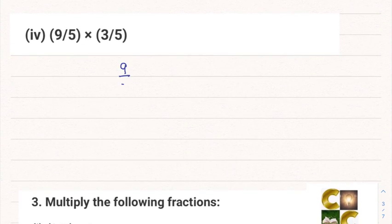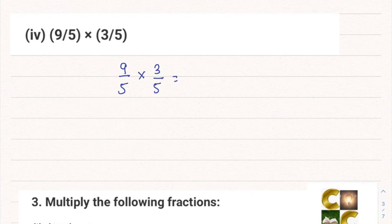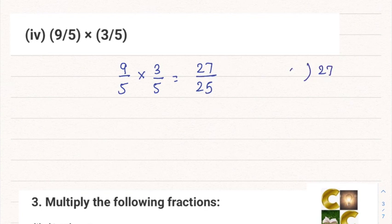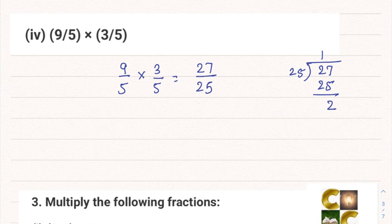Fourth part: 9/5 multiplied by 3/5. Nothing cancels here, so we simply multiply: 9 threes are 27 and 5 into 5 is 25, giving 27/25. This is an improper fraction, so we divide: 25 ones are 25 and the remainder is 2, so in mixed fraction form this is 1 and 2/25.